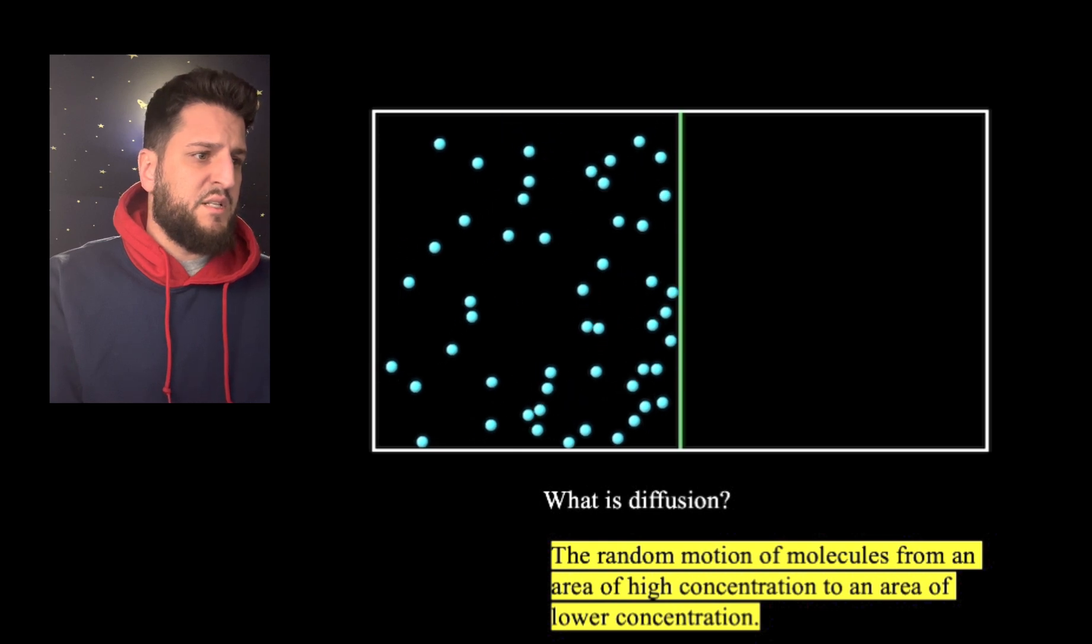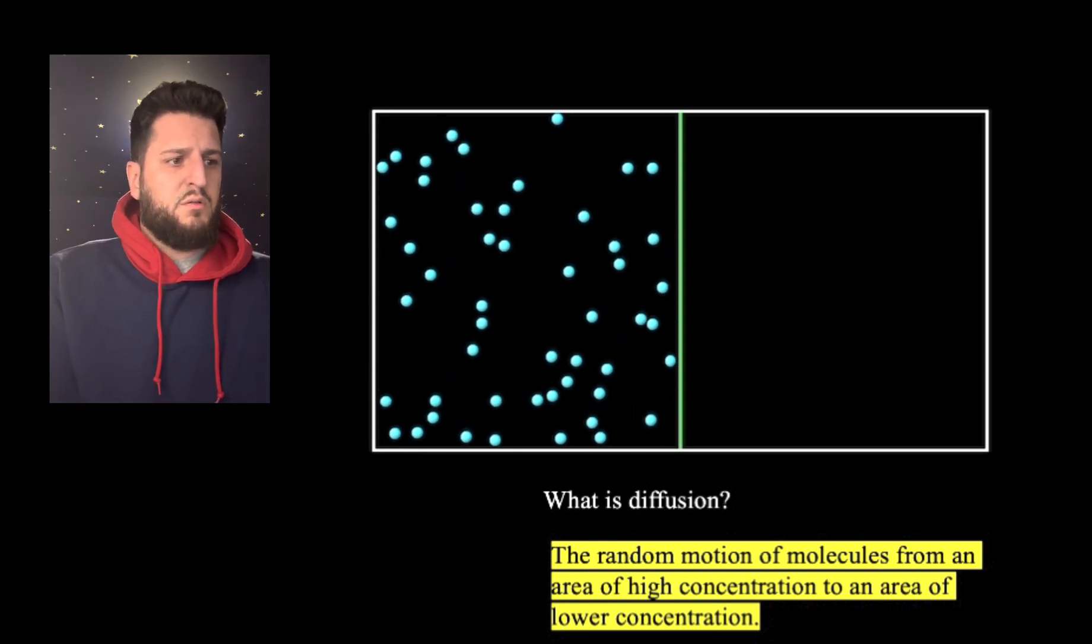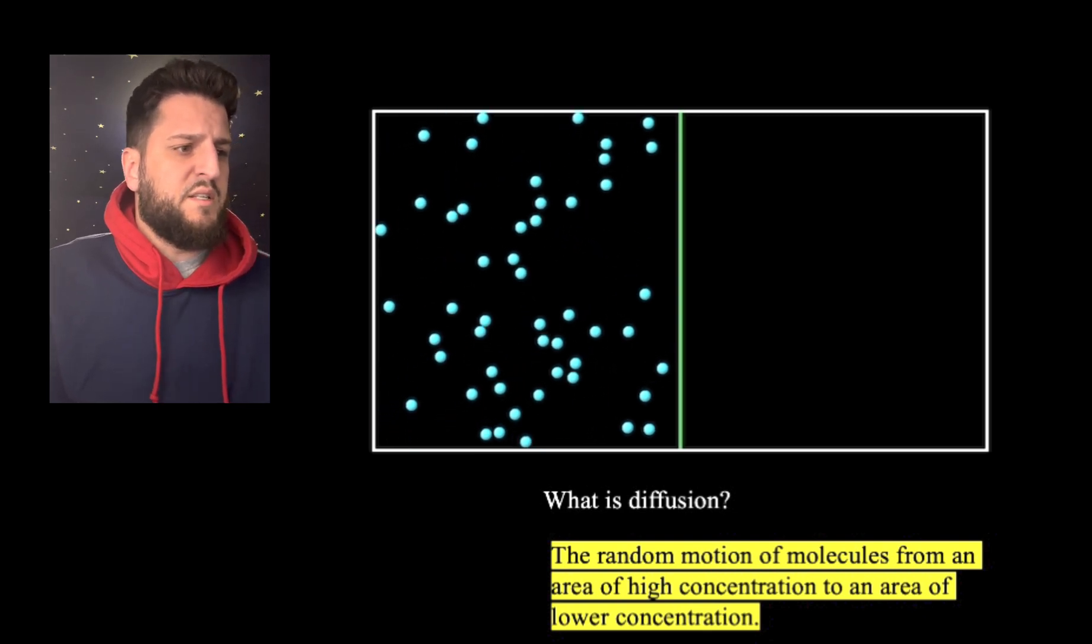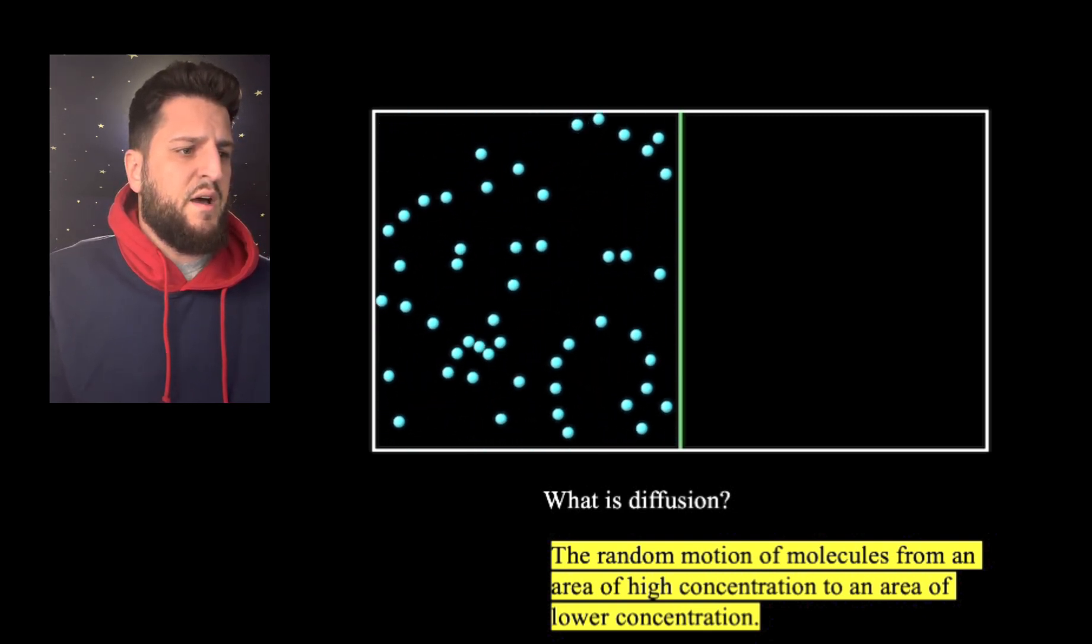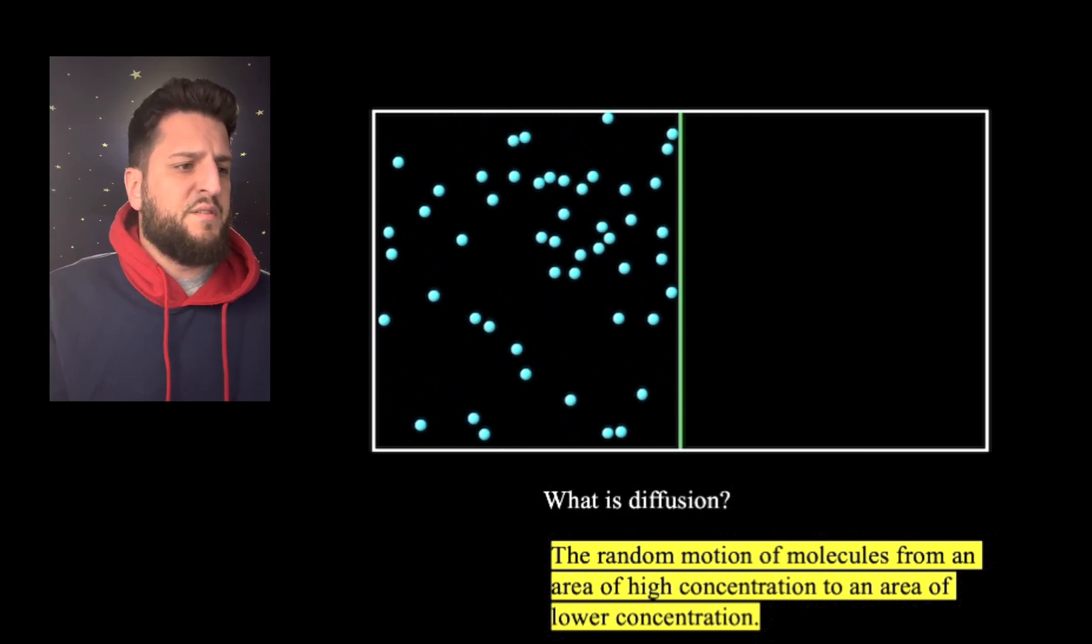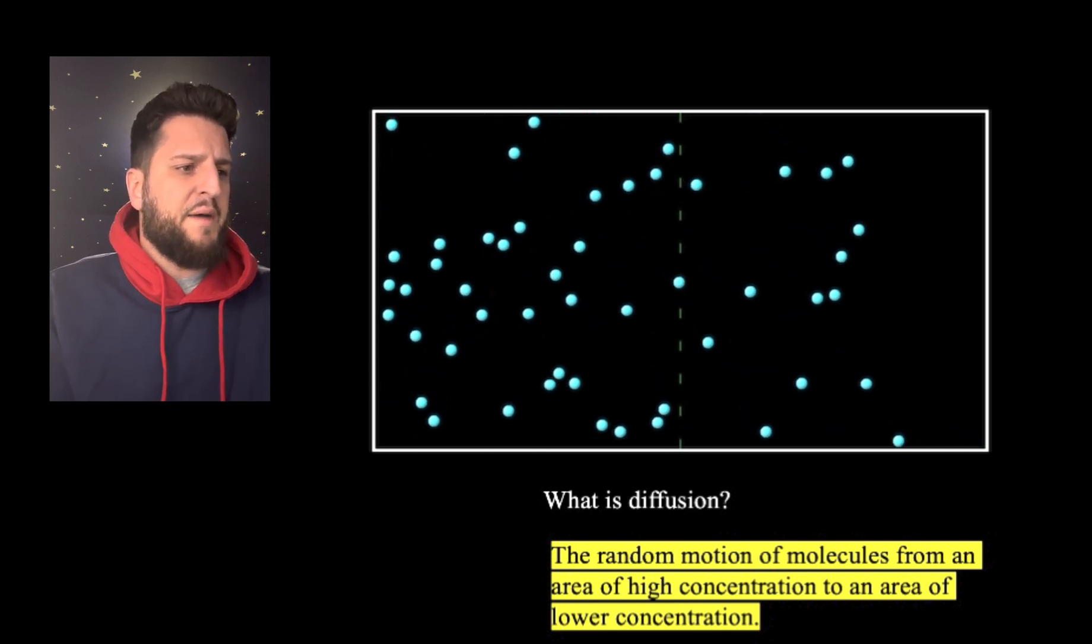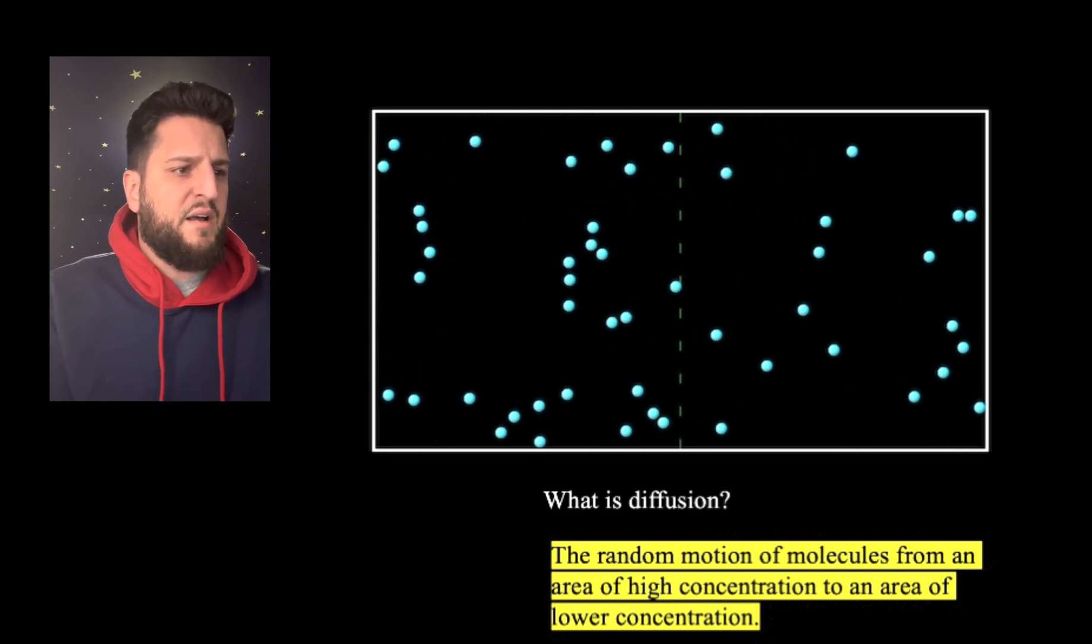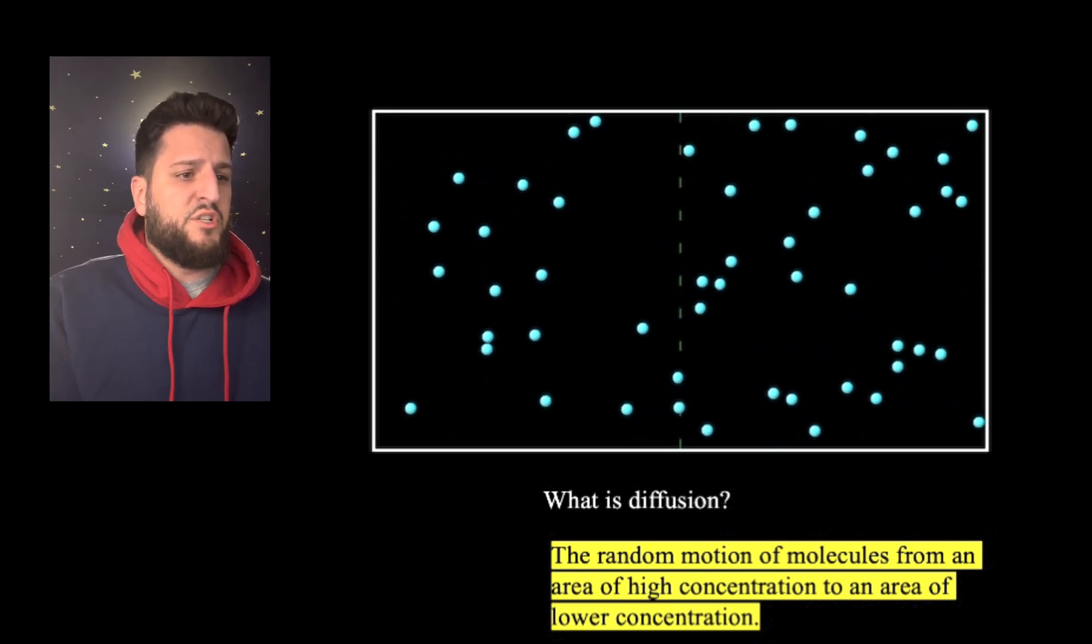As you can see in the simulation of the blue particles that are going around, there is an area of high concentration with a non-permeable membrane right now. Once I remove this divider, it's going to become semi-permeable and you can see diffusion happening, going from an area of high concentration to an area of low concentration until it reaches equilibrium.